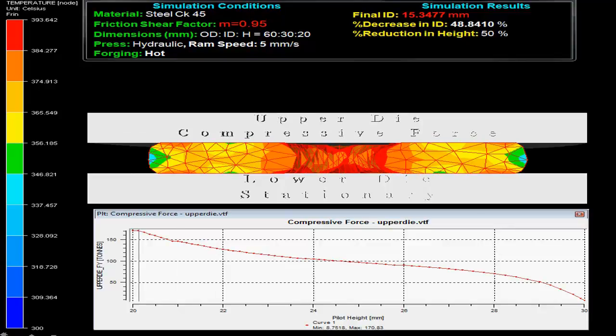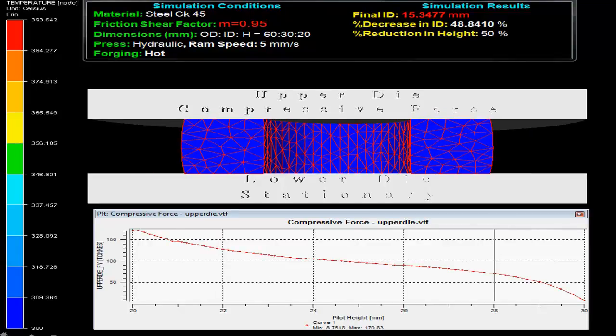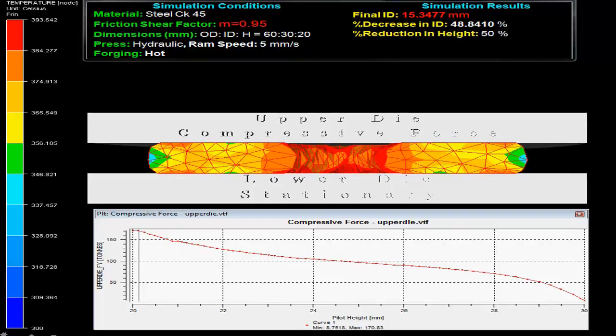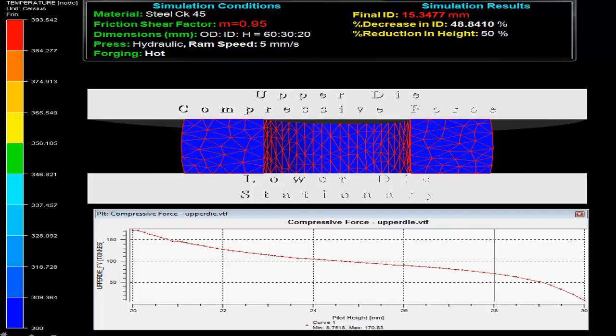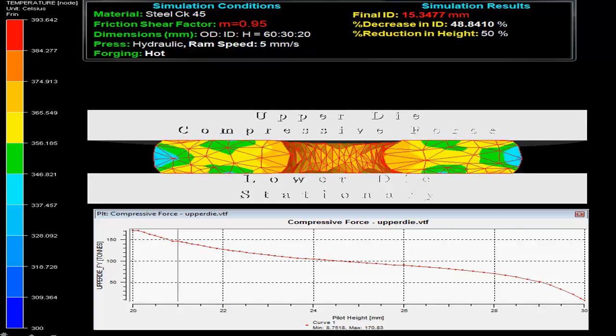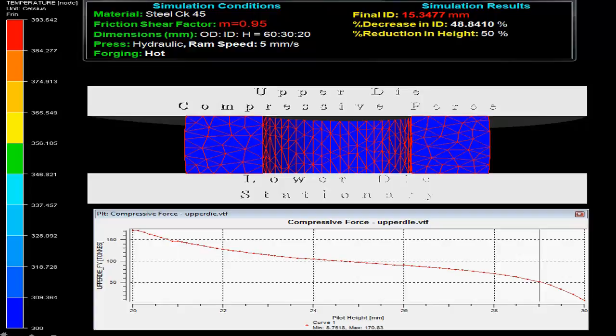Ring compression test has widely been used to evaluate the friction condition in metal forming processes. The video shows a short ring specimen being plastically compressed between two flat dies, with the lower die stationary and upper die movable.